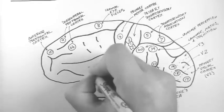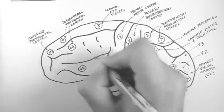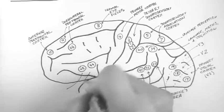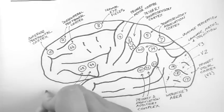Down here, in the pars triangularis, is Broca's area. This is another area we hear a lot about, and it's involved in the formation of language.